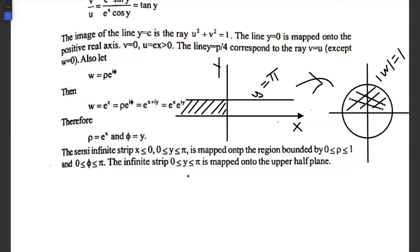Since ρ = e^x, when x = 0 (the maximum value), ρ = e^0 = 1, so the maximum radius is 1. For x = −1, ρ = e^(−1) = 1/e, which is a circle with radius less than 1. For x = −3, ρ = e^(−3), still smaller. As x → −∞, ρ → 0. So all circles lie inside the unit circle |w| = 1.